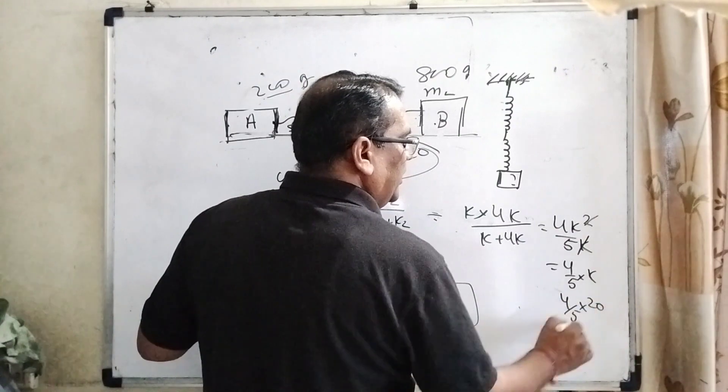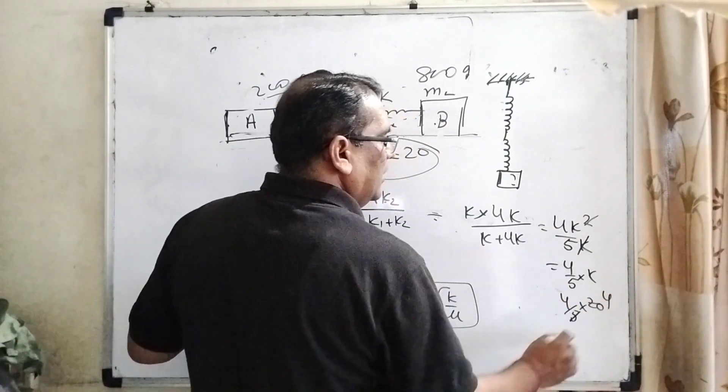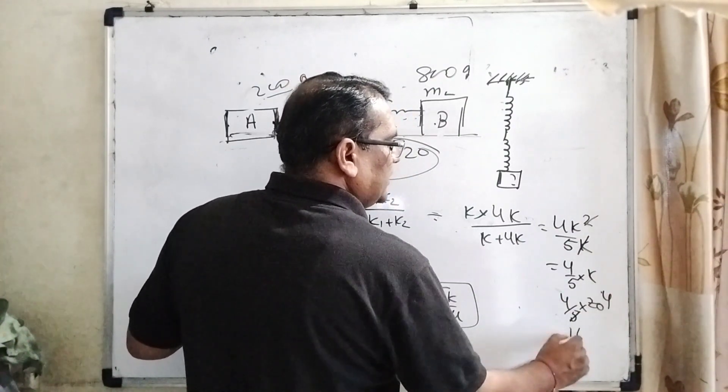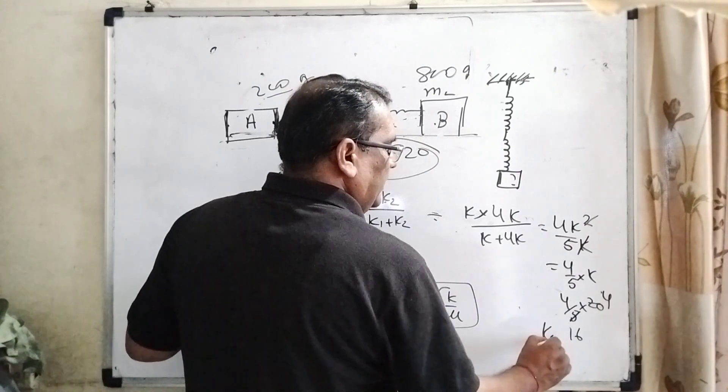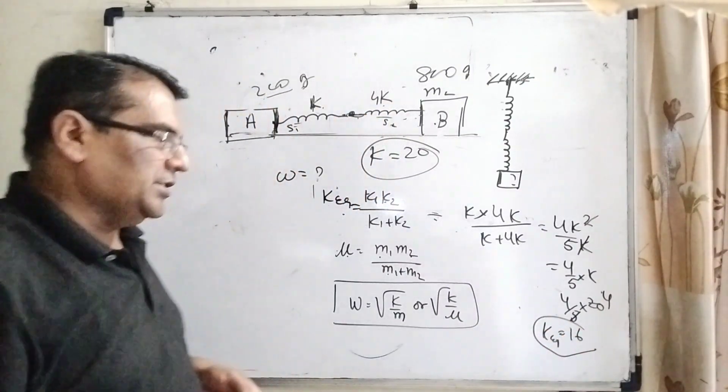Then 4 by 5 into 20 means 5 fours are 20, 4 fours are 16. So equivalent spring constant is 16.